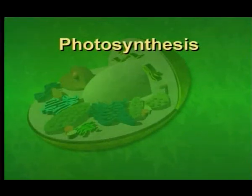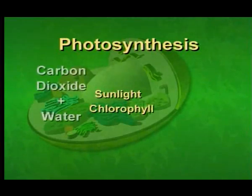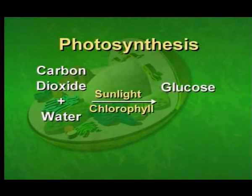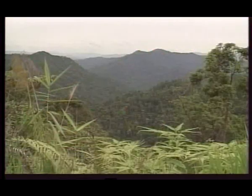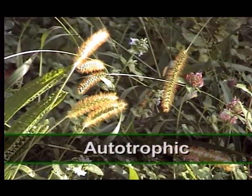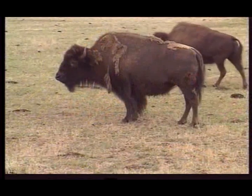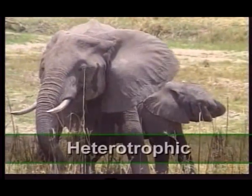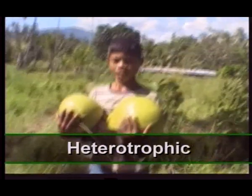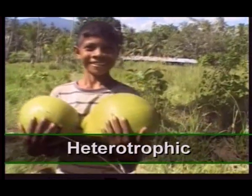During photosynthesis, the chloroplasts use the energy of sunlight to combine the water and carbon dioxide. This brings a carbon molecule from the carbon dioxide into the living system, enabling the plant to make new sugars, such as glucose. The reaction also releases oxygen. Because of their ability to photosynthesize, plants are described as autotrophic, which means that they produce their own food. Organisms that cannot produce their own food are called heterotrophic. Animals, for instance, are heterotrophs — they must eat and digest food to produce glucose for cellular respiration.